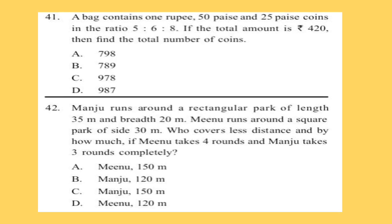Question 41: A bag contains one rupee, 50 paise, and 25 paise coins in the ratio 5 to 6 to 8. If the total amount is rupees 420, then find the total number of coins.